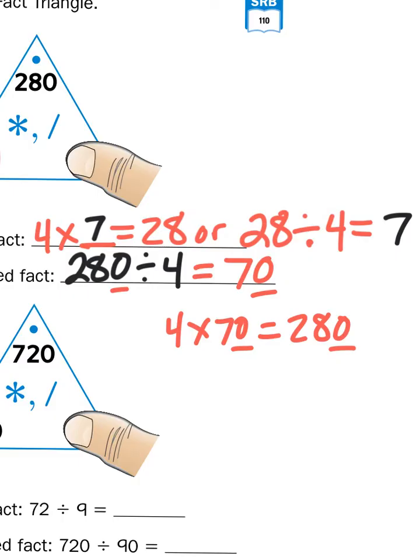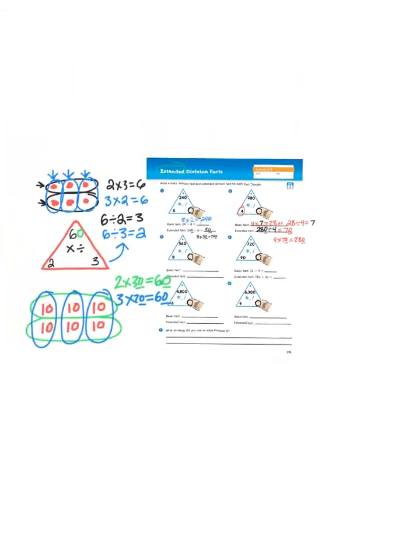We are just thinking about the single digit multiplication and division facts that we already know, and we're just adding in some 0s.